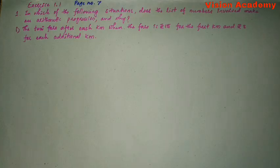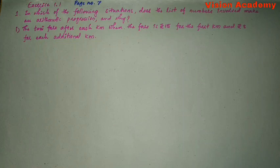Hello my dear students. My name is Hanumanth Ladwa. Welcome to Vision Academy. In this video we are going to solve exercise 1.1, question number 1: In which of the following situations does the list of numbers involved make an arithmetic progression and why?